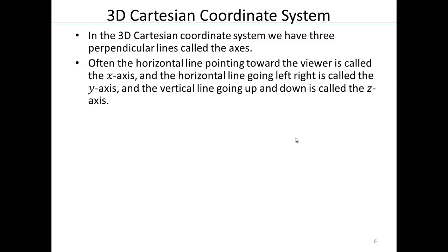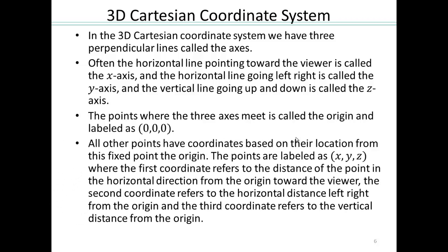Often the x axis is pointing towards you. The y axis will be going left and right, and the z axis will be going up and down. Again, where all the three axes meet, the points are labeled as (0,0,0). And then the rest of the points are based from this origin point, the reference point. And you go x direction first, y direction second, and z direction last.